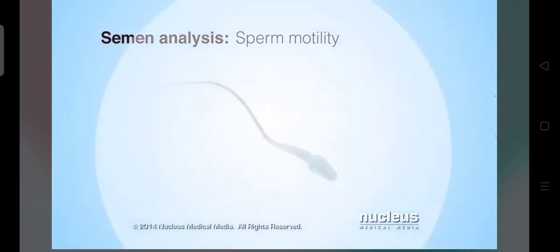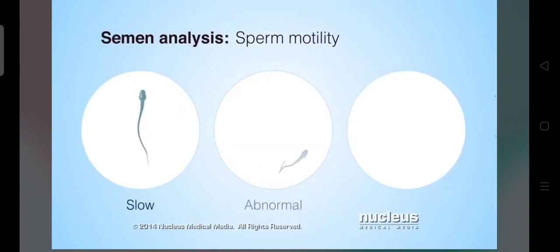If the sperm have poor motility, they swim too slowly, don't swim properly, or don't move at all. With poor motility, the sperm may not be able to swim toward a woman's egg to fertilize it.